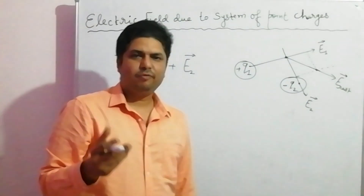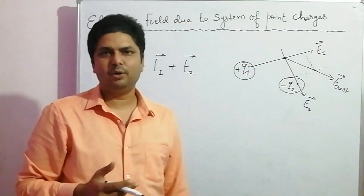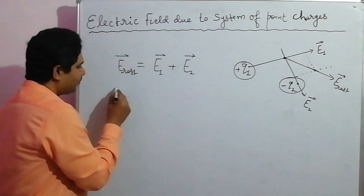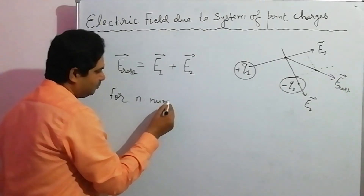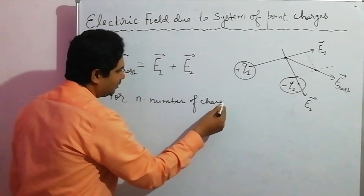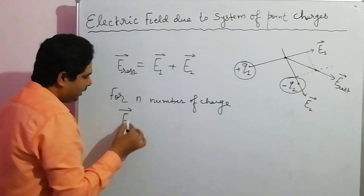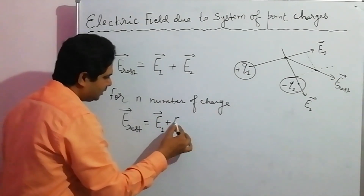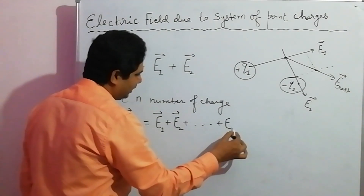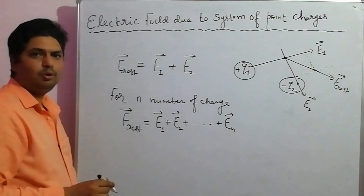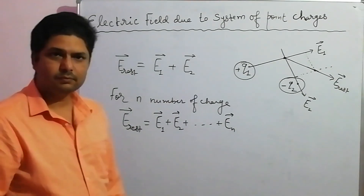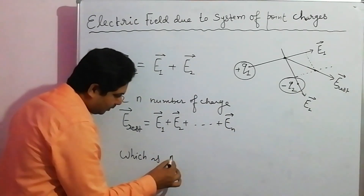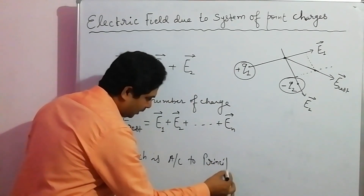Thus if we have two charges Q1 and Q2, they produce electric fields E1 and E2, and their vector sum is the resultant electric field. For N number of charges, we can write E resultant equals E1 plus E2 plus dot dot dot plus EN. This is according to the superposition principle.